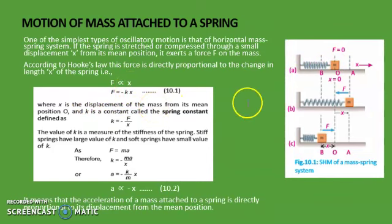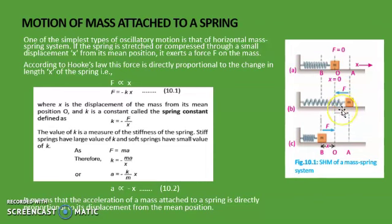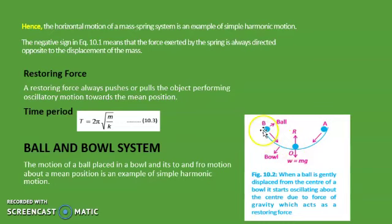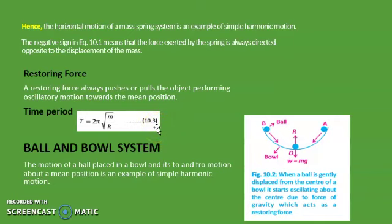Third, the direction of the force should always be toward the mean position. In this example, when the ball moves upward, the restoring force acts in the downward direction toward the mean position. When the body moves leftward, the restoring force acts toward the mean position. When displacement was toward the rightward, the restoring force was acting in the leftward direction. When the ball moves upward and displacement is toward the left side, the restoring force acts toward the right side — toward the mean position. In both examples, the direction of restoring force is always toward the mean position. So we can say that the ball and bowl system is also executing simple harmonic motion.